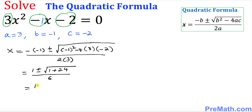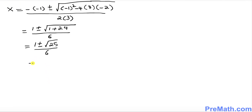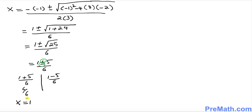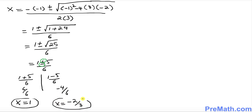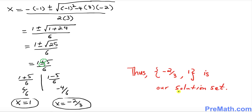This gives x = (1 ± √25) / 6, and since √25 = 5, we have x = (1 ± 5) / 6. Splitting: (1 + 5)/6 = 6/6, so x = 1 is one solution; and (1 - 5)/6 = -4/6 = -2/3 is the other. Thus negative 2/3 and 1 is our solution set. Thanks for watching — please subscribe to my channel for more exciting videos.